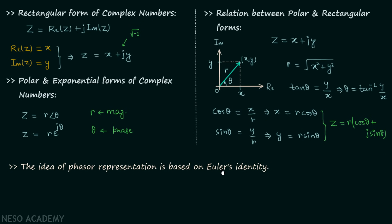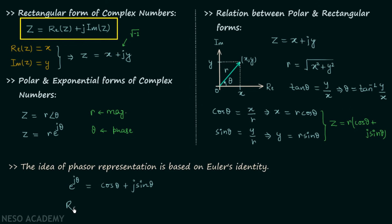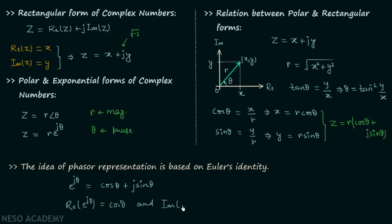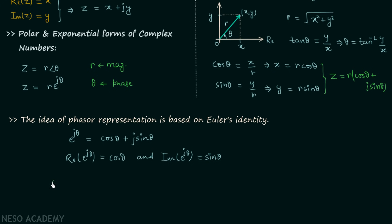The phasor representation is based on Euler's identity: e to the power jθ equals cos θ plus j sin θ. The real part of e^(jθ) is cos θ and the imaginary part is sin θ. Let the sinusoidal function be V(t) equal to Vm cos(ωt + θ).